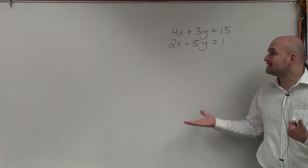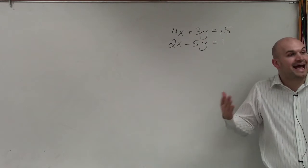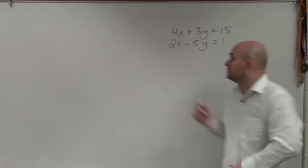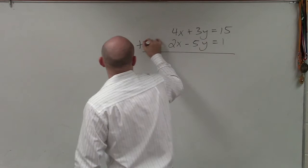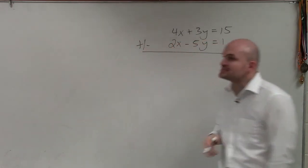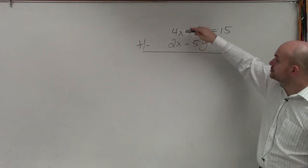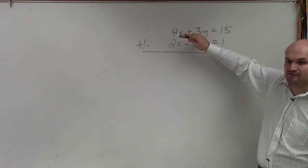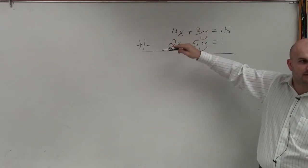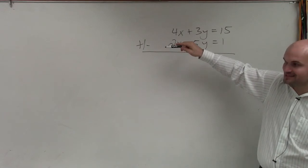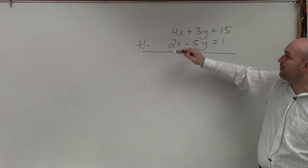So to apply the elimination method to add or subtract, I have to get them to be the same. So what I'm going to need to do is I want to determine what is going to be the smallest common multiple of my coefficients. So what is the smallest common number that 4 and 2 share? [Student: 2, 2, 1] Multiples, guys, not factors. [Student: 4] Multiples, yes, 4.